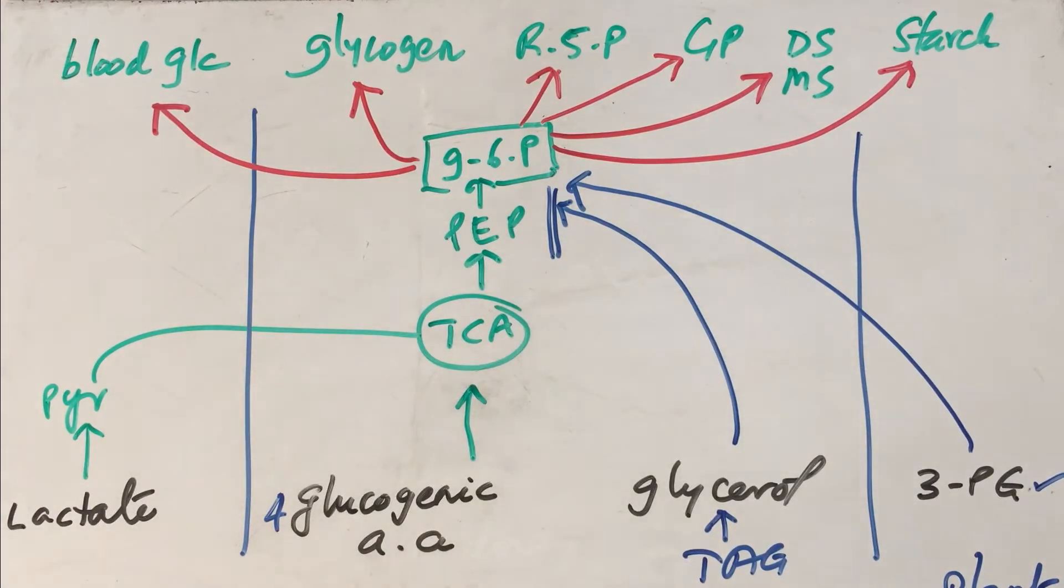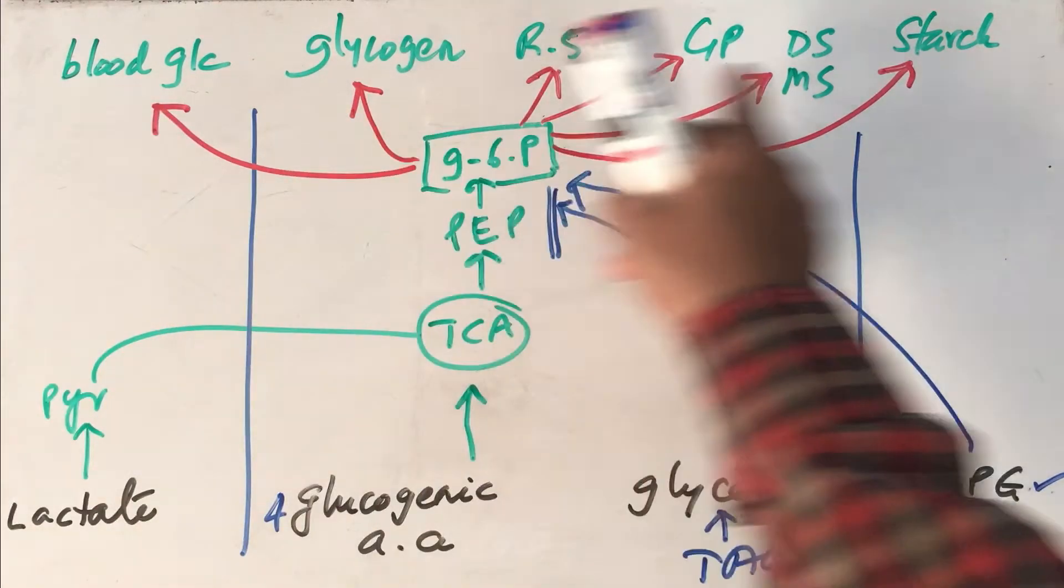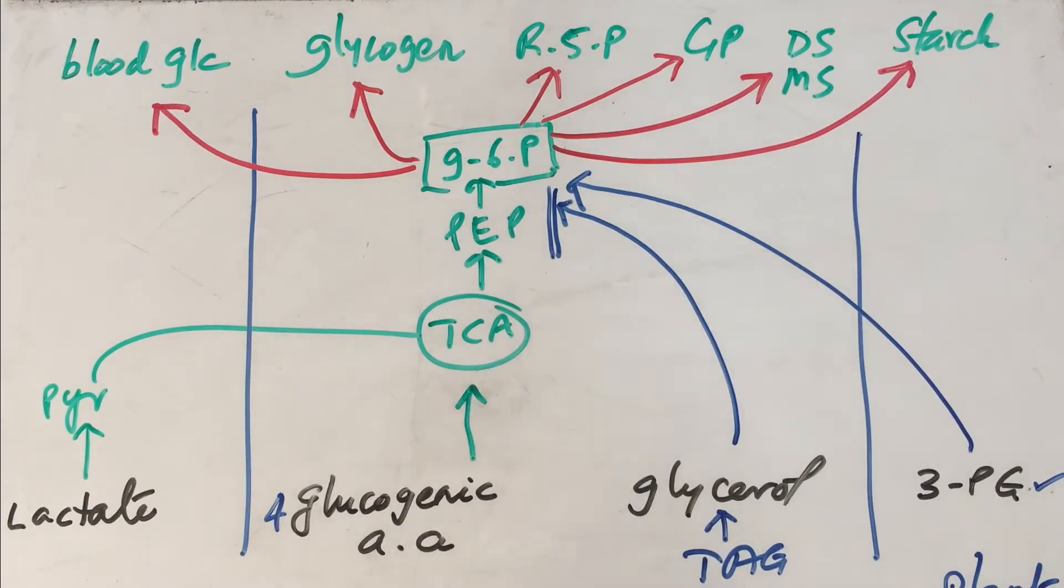So now this ribose 5-phosphate is the starting material for nucleic acid synthesis. So you can see the variety of functions this particular pathway has. Therefore gluconeogenesis becomes a very crucial pathway for maintaining all these molecules and sustaining life.